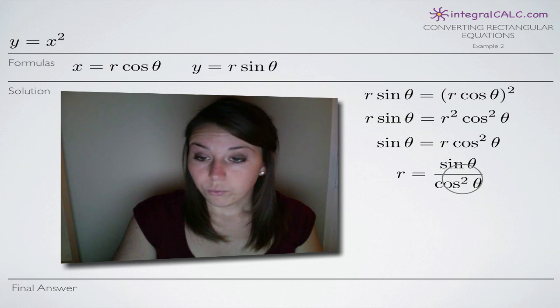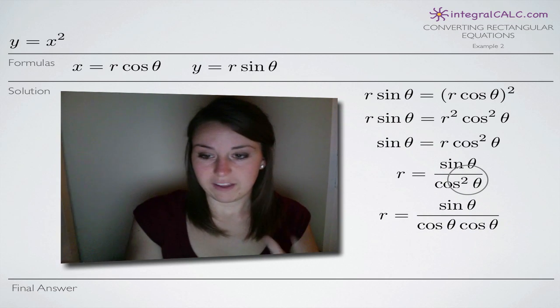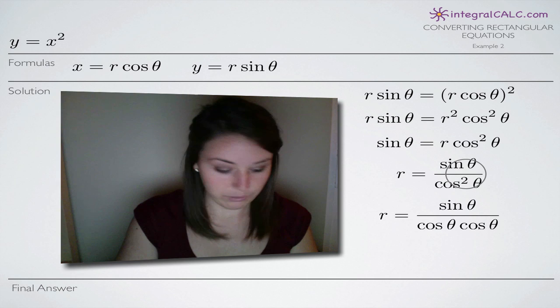Now to simplify this, we can change this cosine squared of theta into cosine of theta times cosine of theta which is the same thing, we just broke it apart.